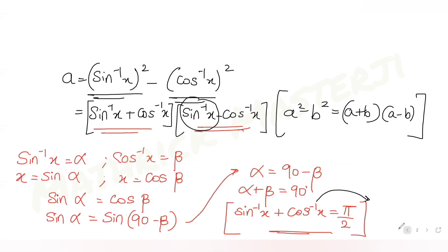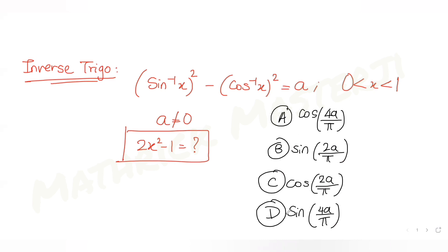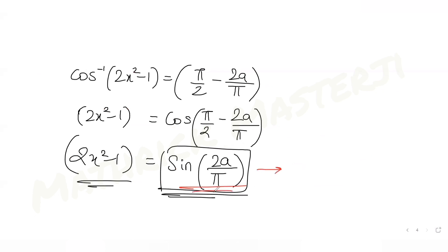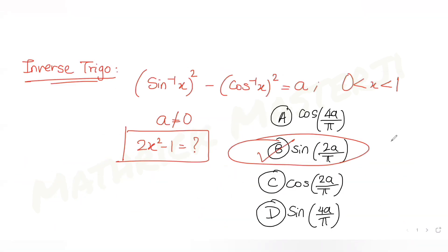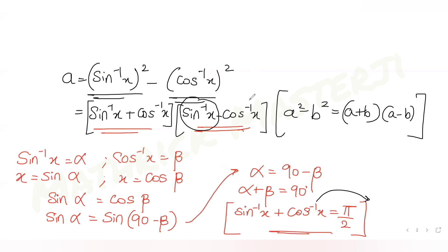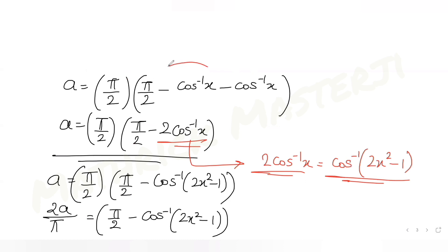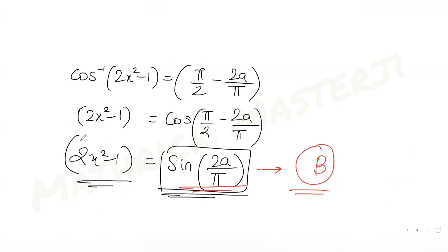We were asked to find 2x² − 1, and looking at the answer choices, it matches sin(2a/π), which is option B. So B is the correct answer. To summarize: we used sin⁻¹x + cos⁻¹x = π/2, rewrote sin⁻¹x as π/2 − cos⁻¹x, applied the double angle identity, and arrived at 2x² − 1 = sin(2a/π).